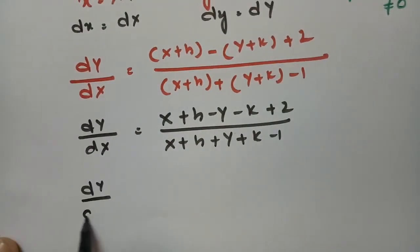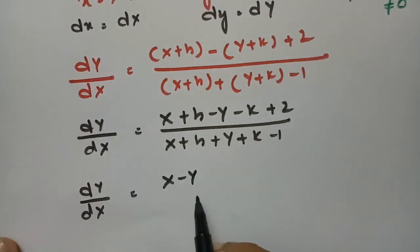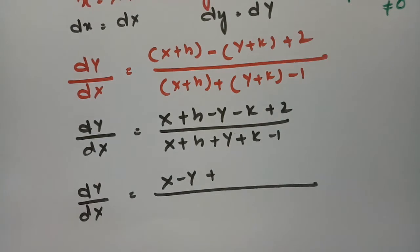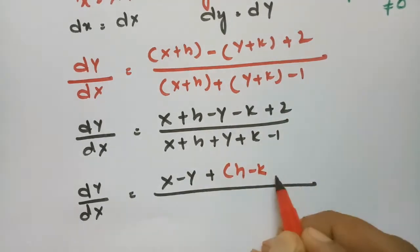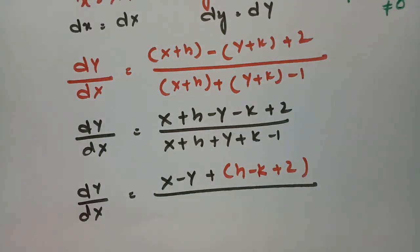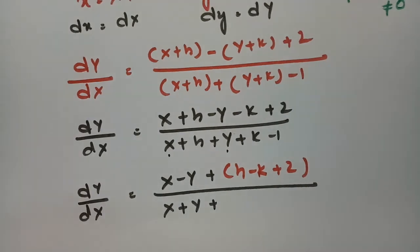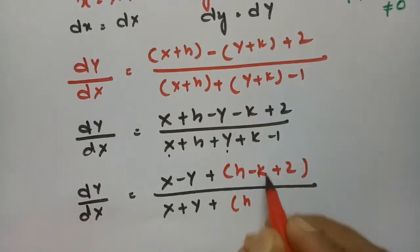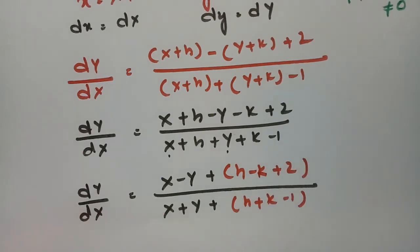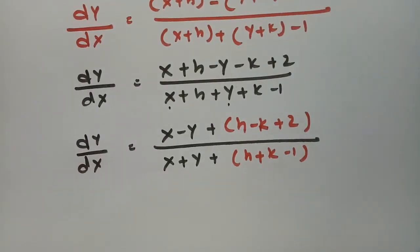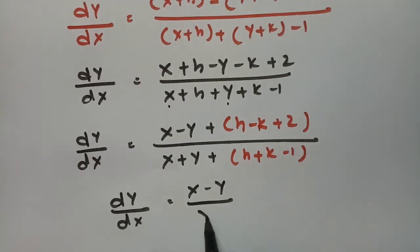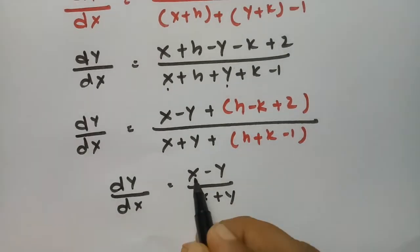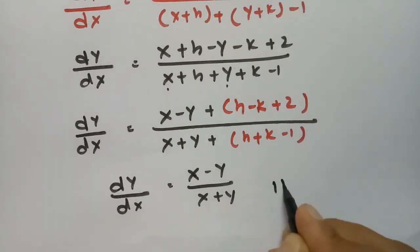We choose h and k so that the constant terms vanish: h - k + 2 = 0 and h + k - 1 = 0. This reduces the equation to the homogeneous form dY/dX = (X - Y) / (X + Y), where throughout the equation the degree is maintained as 1. So it becomes a homogeneous differential equation.